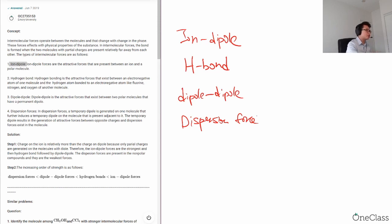So the general trend shows that the ion-dipole is stronger than hydrogen bond, hydrogen bond is stronger than the dipole-dipole interaction, and the dipole-dipole interaction is stronger than the dispersion force.